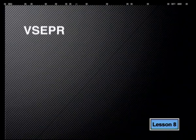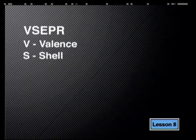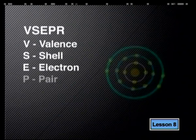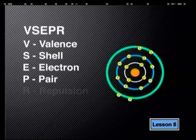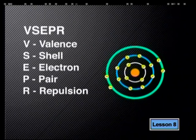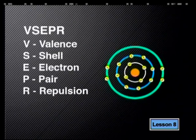The V stands for valence. The S for shell. The E for electron. The P for pair. And R for repulsion. Valence, shell, electron, pair, repulsion.